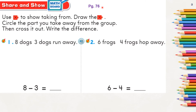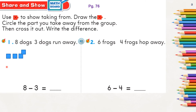Next, page number 76, Share and Show. Use counters to show taking from: draw the counters, circle the part you take away from the group, then cross it out, and write the difference. First question: eight dogs, three dogs run away. Draw eight cubes representing eight dogs — one, two, three, four, five, six, seven, eight.